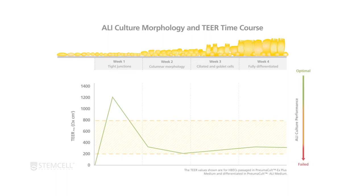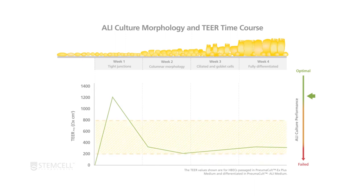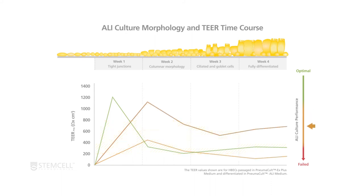This TEER time course compares 4 cultures with different differentiation performance. An optimal culture displays peak TEER value at week 1, drops by week 2, and plateaus over the course of week 3 to week 4, with values ranging from 200 to 800 ohms centimeters squared. Suboptimal cultures display a delayed peak TEER value at week 2, and differentiation is not as forthcoming. A failing culture, however, will not maintain an intact epithelium and will therefore not produce successful barrier function.